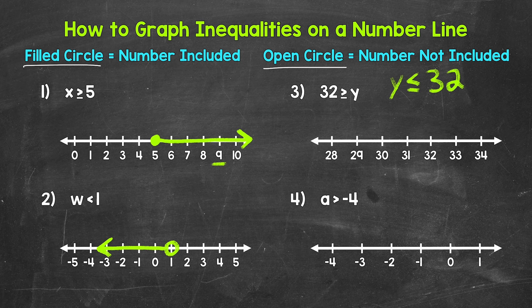Now let's graph this on the number line. We need a filled circle at 32, and then since y is less than or equal to 32, the arrow needs to point left — the direction of all of the numbers less than 32. So we need an arrow pointing left. And now we have our inequality graphed. The filled circle shows that we are including 32, and then the arrow represents all of the numbers less than 32.